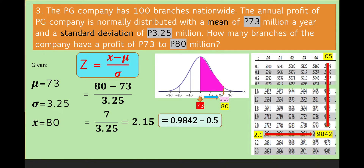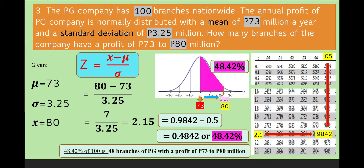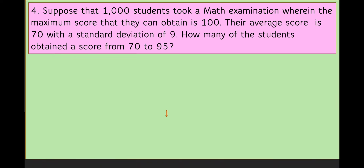We subtract half of the normal curve, which is 0.5. So 0.9842 less 0.5 is equal to 0.4842, or 48.42%. Therefore, this area is equal to 0.4842. To answer the problem, we get 48.42% of 100 branches, which gives approximately 48 branches with a profit of 73 to 80 million pesos.